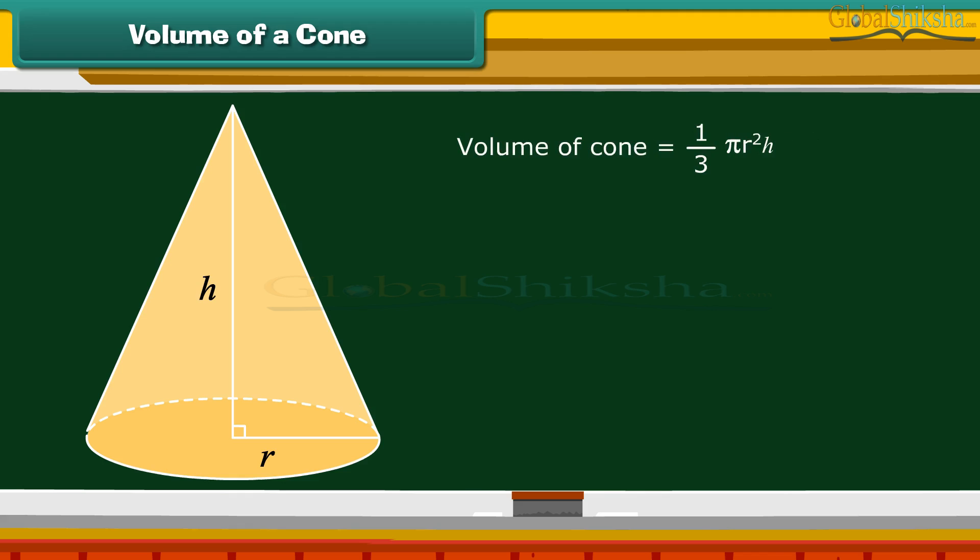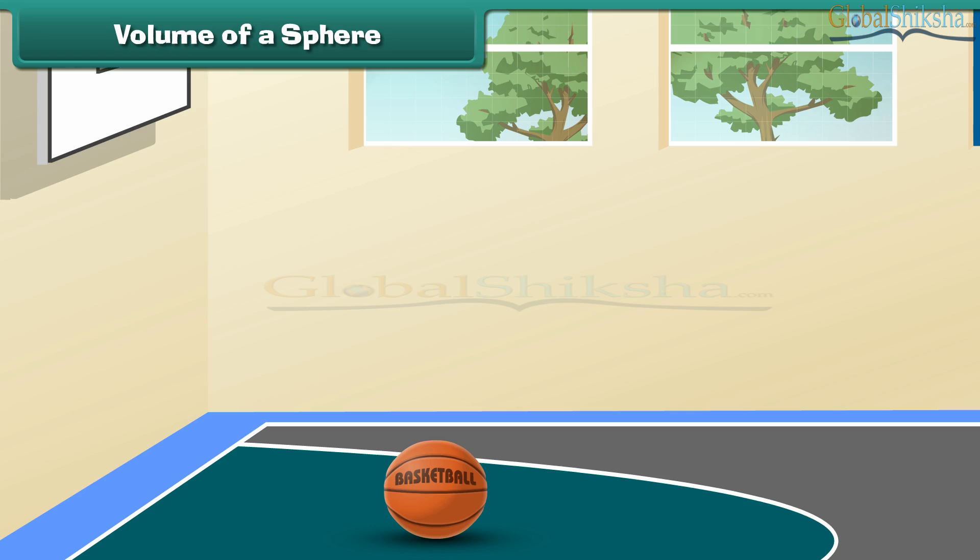Volume of a cone is simply given by 1 by 3 pi R square H, where H is equal to the height of the cone and R is equal to radius of the circular base of the cone.